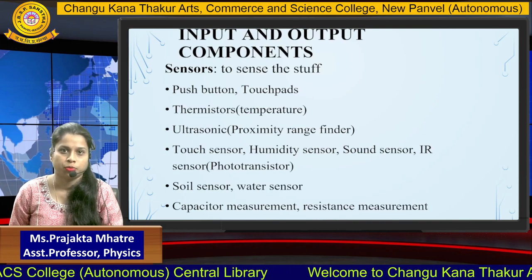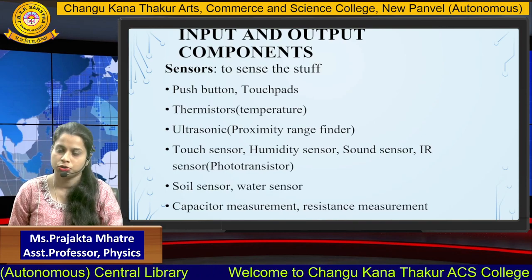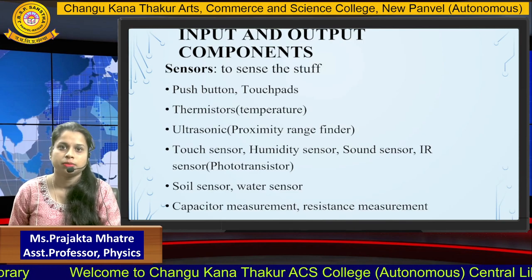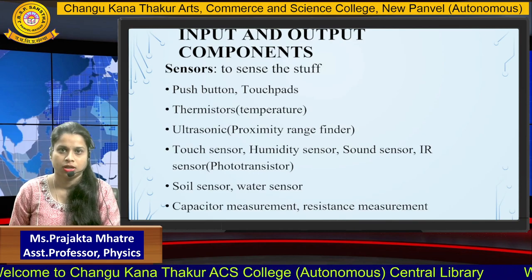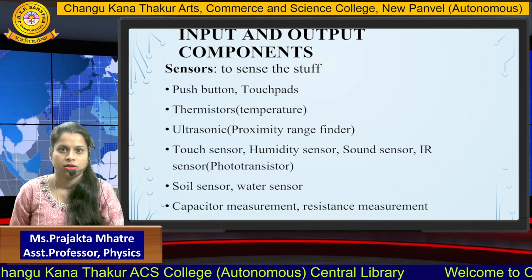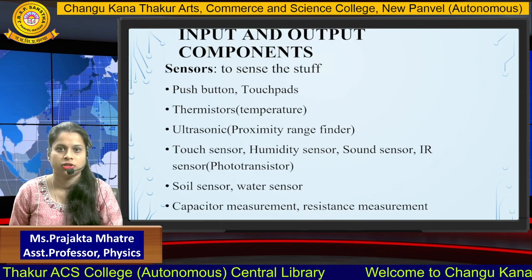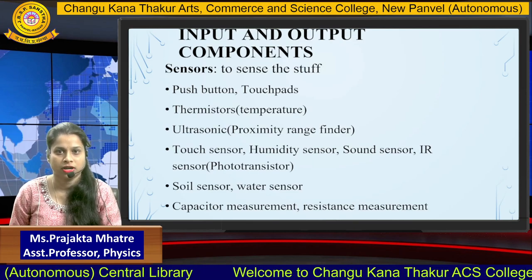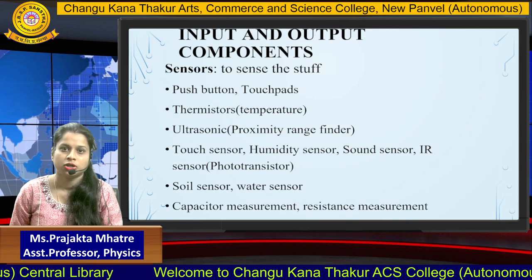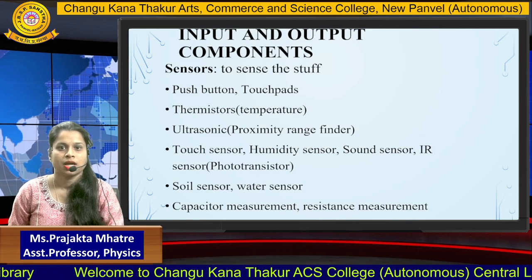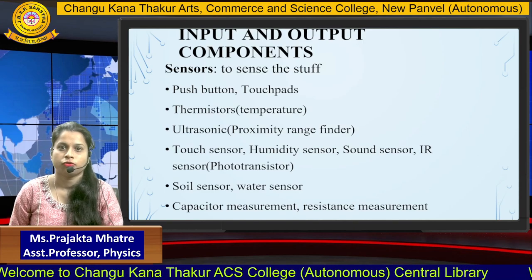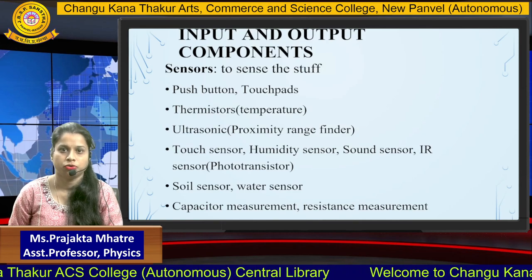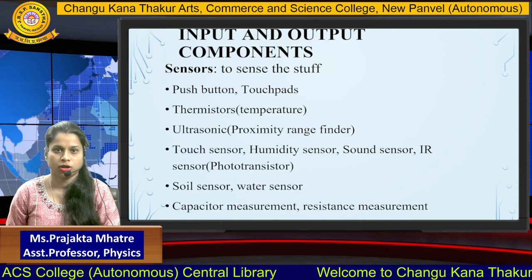There are some input and output components. Arduino is basically used for giving input and taking output. Some input components like sensors and buttons are used in Arduino. The sensors include push buttons, touch pads, thermistors which measure temperature, ultrasonic sensors which measure proximity and distance, humidity sensors, sound sensors, IR sensors used to measure phototransistor signals, and soil sensors. There are various kinds of sensors used as input components while programming.